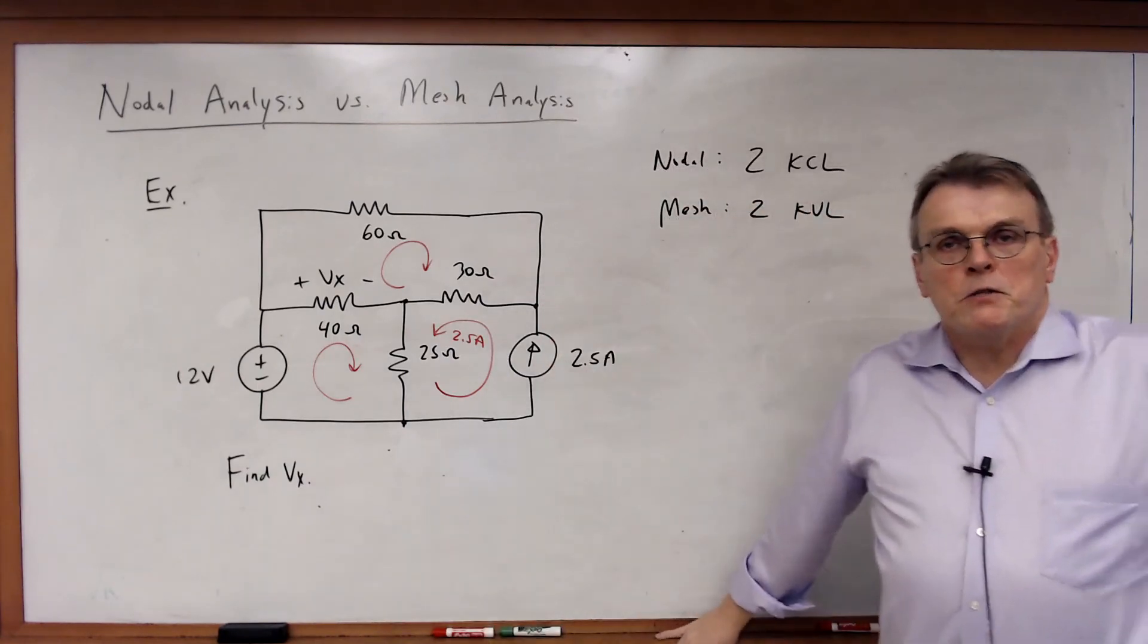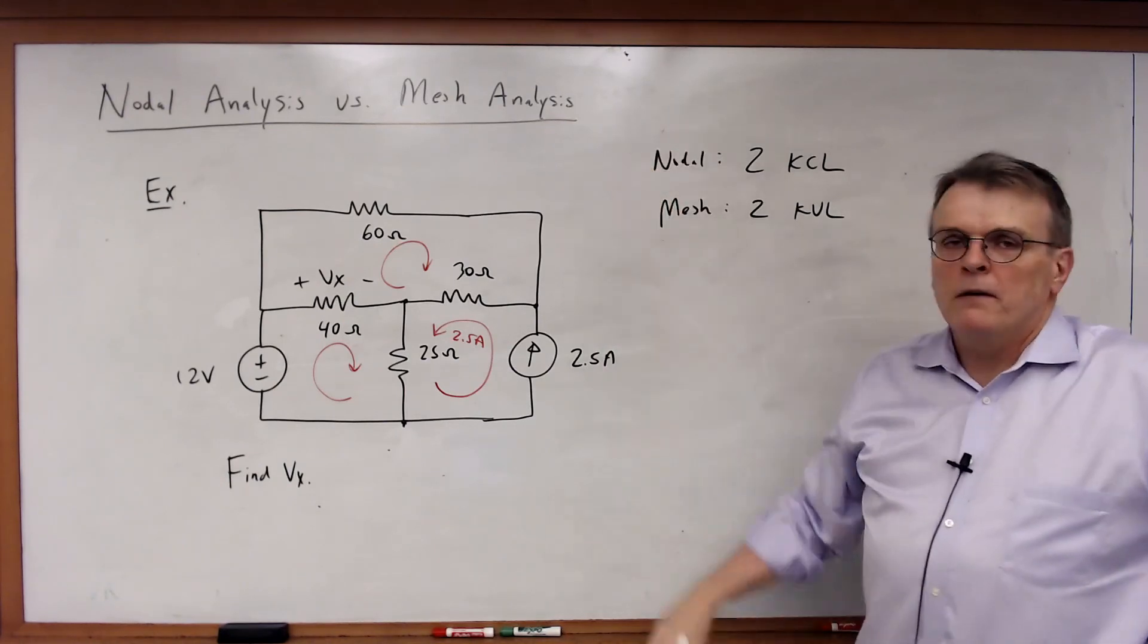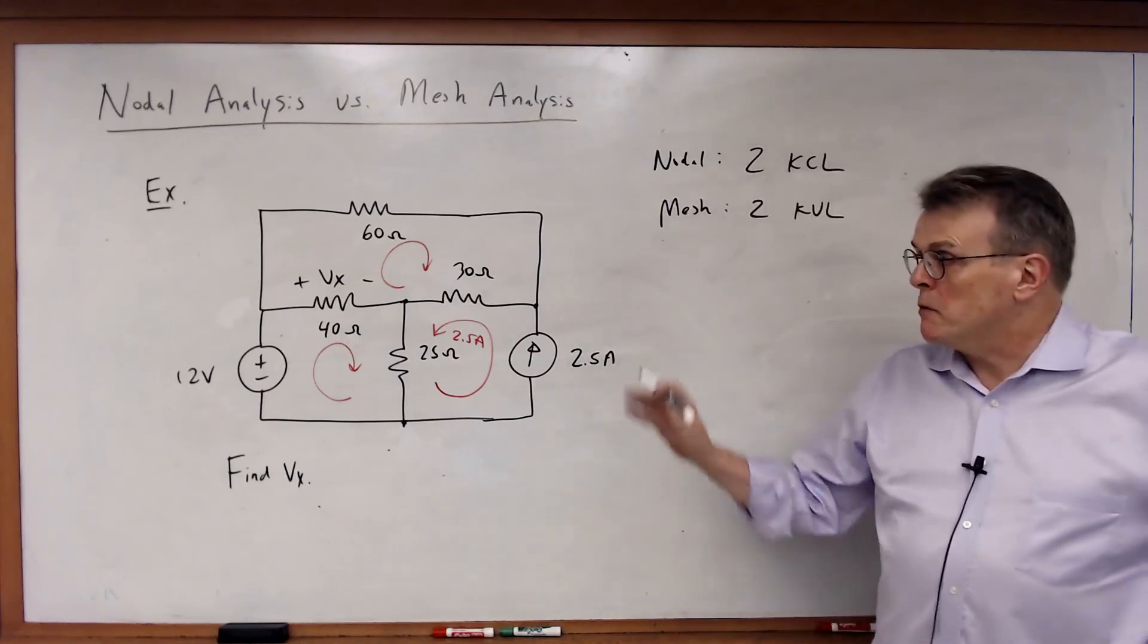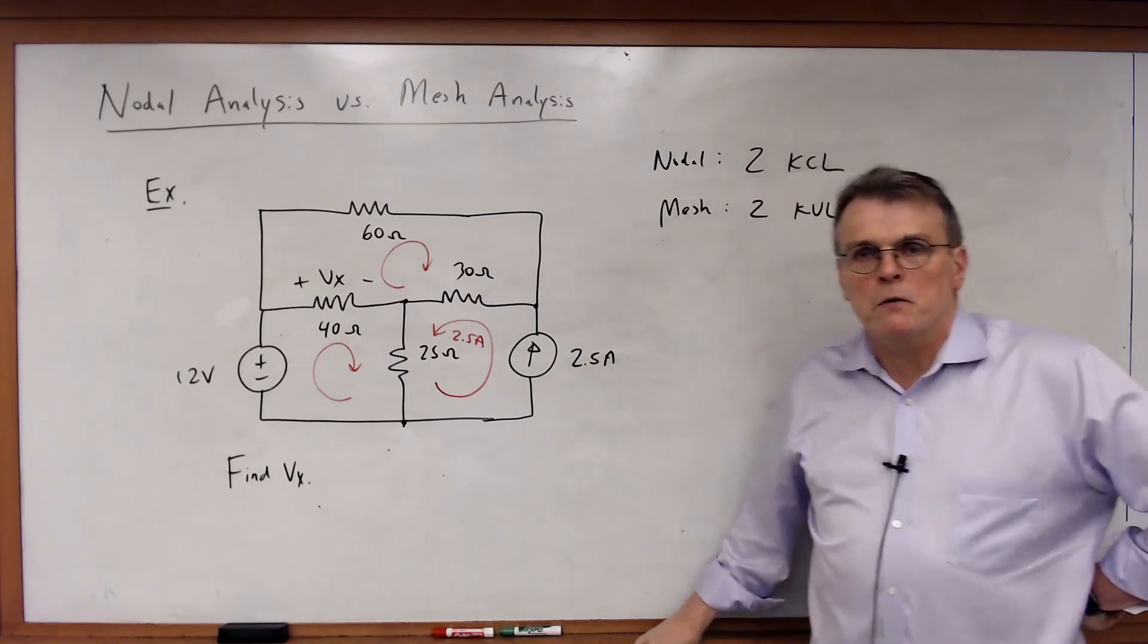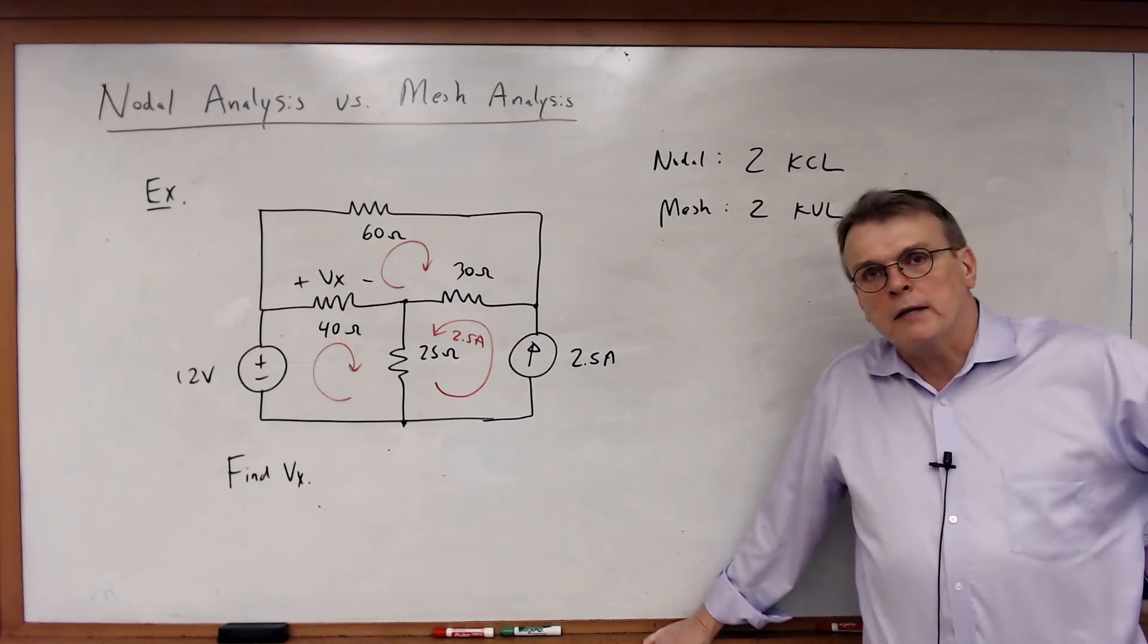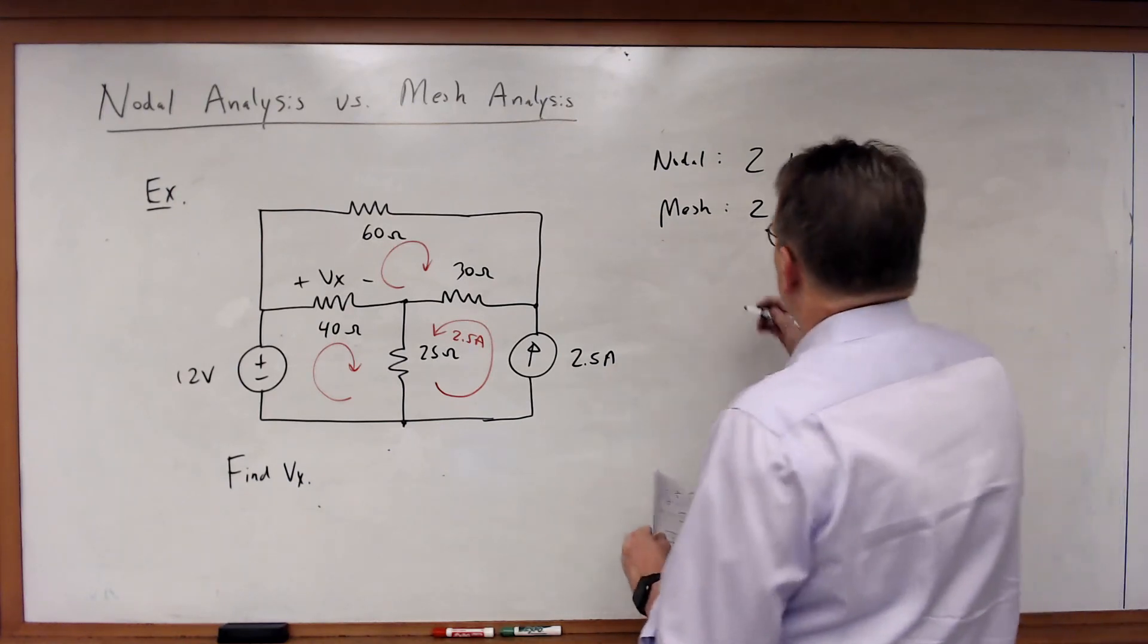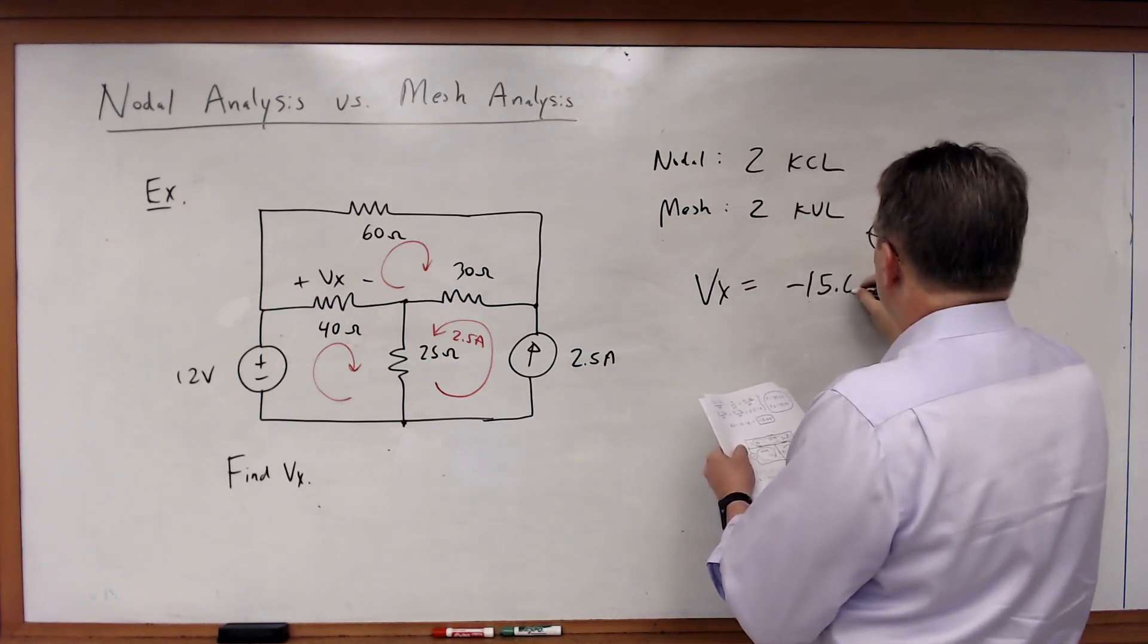So which technique do I choose? Which one do I choose? Flip a coin. Equally difficult or equally easy with either technique. So at this point, it's your choice. And if you go through and solve this, once again, just for the sake of completeness, you'll find that Vx is equal to minus 15.6 volts. And again, it's a good idea to go through and just practice and make sure you do get that answer regardless of whether you do it with mesh or nodal.